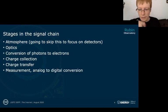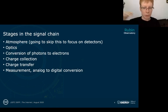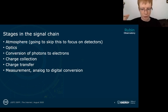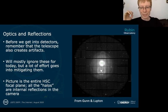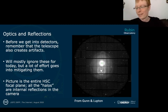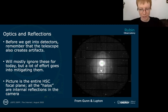Our table of contents: we'll go through the atmosphere, optics, conversion, collection, and transfer and measurement — the main stages of the CCD. But before we get there, it's good to remember that there's a telescope in front of these CCDs, and not all of the artifacts or weird structures we see in images are necessarily related to the CCD itself.